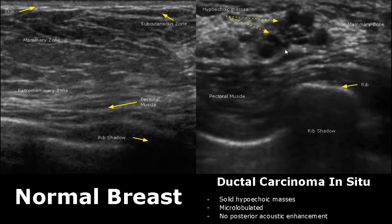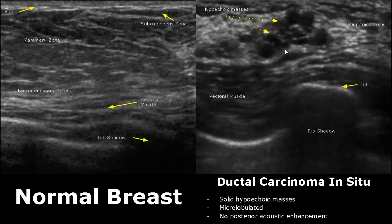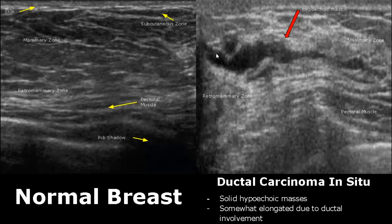Ductal carcinoma in situ will have hypoechoic masses which will be microlobulated, meaning they have outpouchings, and there is no posterior enhancement, indicating a solid mass. In another image, the mass involves the ducts so it appears elongated. Usually these hypoechoic masses involving the duct are ductal carcinoma in situ.